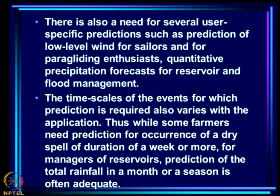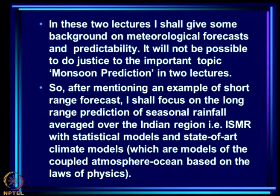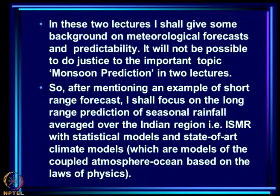The time scales of events for which prediction is required vary with the application. Some farmers need prediction of dry spells of a week or more, while for reservoir managers, prediction of total rainfall in a month or season is often adequate. In these two lectures I shall give background on meteorological forecasts and predictability. After mentioning an example of short-range forecast, I shall focus on long-range prediction of seasonal rainfall over the Indian region — ISMR — with statistical models and state-of-the-art coupled ocean-atmosphere climate models.